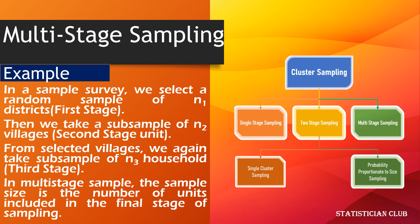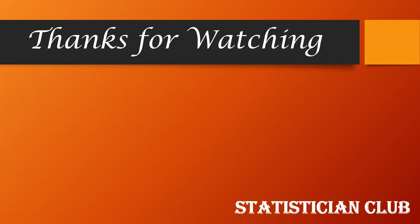For example, in a sample survey we first select a random sample of n1 districts — this is the first stage. Then we take a subsample of n2 villages from each selected district — this is the second stage. From the selected villages we again take a subsample of n3 households — this is the third stage. In a multi-stage sample, the sample size is the number of units included in the final stage of the sample, which here are the selected households.